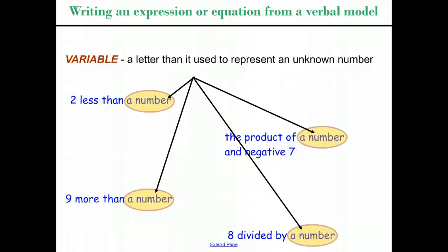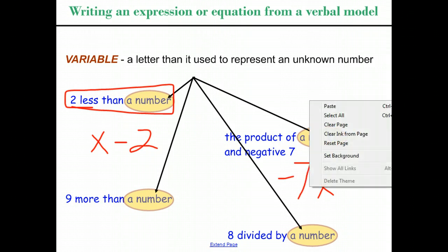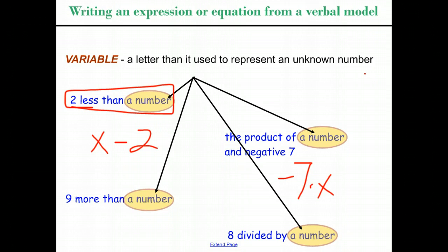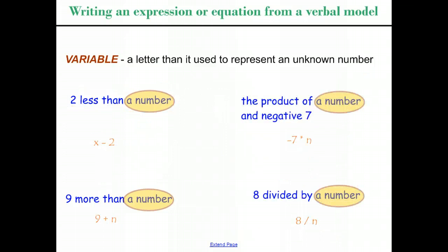So when we get to actually writing down what these expressions mean, 7 less than a number. Well, we have our number, let's say x, and we want 7 less than a number, so that would be x minus 7. The product of a number and negative 7. You can write it like this, with a dot in the middle to represent multiplication. Then, of course, we have 9 more than a number, and 8 divided by a number that represents these expressions.